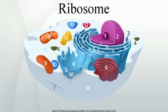Albert Claude, Christian de Duve, and George Emil Palade were jointly awarded the Nobel Prize in Physiology or Medicine in 1974 for the discovery of the ribosomes. The Nobel Prize in Chemistry 2009 was awarded to Venkatraman Ramakrishnan, Thomas A. Steitz, and Ada E. Yonath for determining the detailed structure and mechanism of the ribosome.